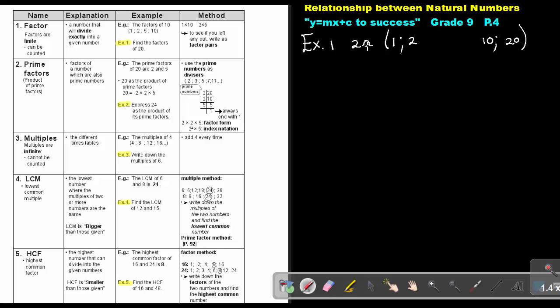Then can 3? No, because 2 plus 0 is 2, and 3 cannot go into 2. Can 4? Yes. And 20 divided by 4, what will that be? 5. And the factors of 20 will be 1, 2, 4, 5, 10, as well as 20.